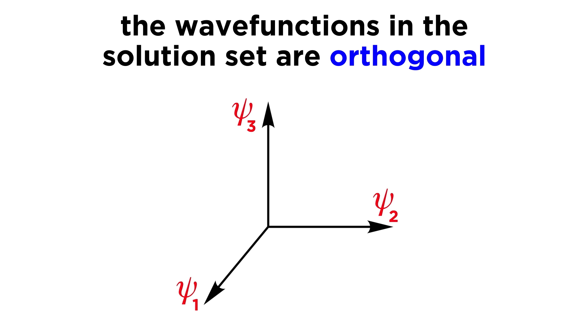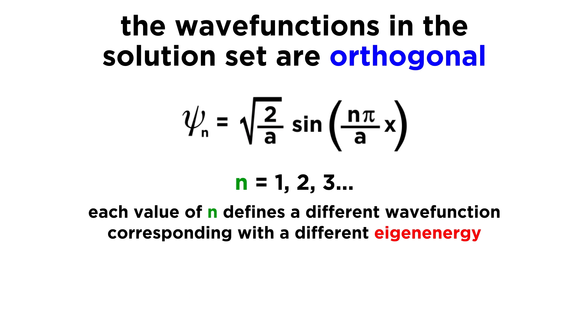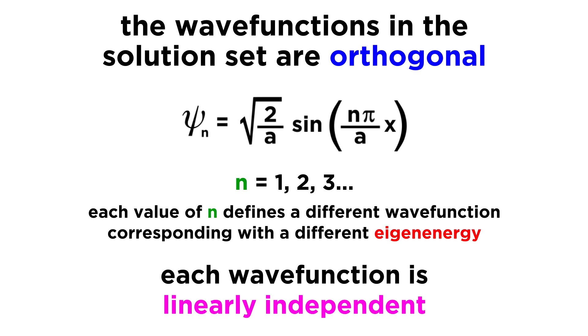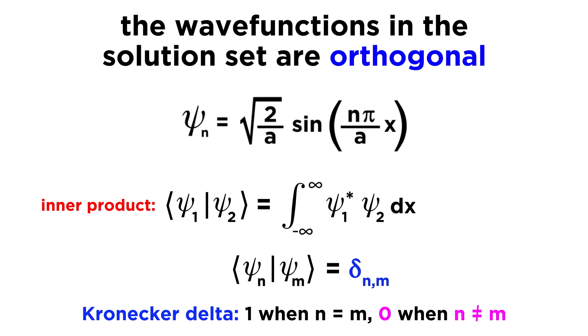This is because normalization ensures that the probability of finding a particle within the boundaries is not greater than one. In this way, a wavefunction that is not normalized can't represent physical reality. Now there is another property of wavefunctions that we have discussed but that we haven't mentioned yet in this context. We must recall that solutions to the Schrödinger equation, which correspond to different eigenvectors, are orthogonal.